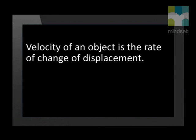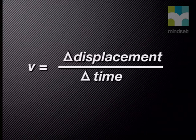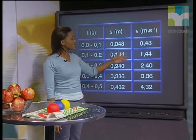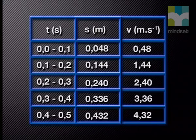Can you calculate the velocity of the mass piece for each time interval? Remember that velocity is defined as the rate of change of displacement: velocity equals change in displacement divided by time. Looking at the values of velocity filled into the table, the velocity increased by 0.096 metres per second for each of the time intervals — the velocity values are increasing uniformly.